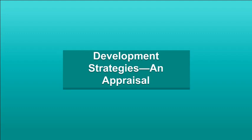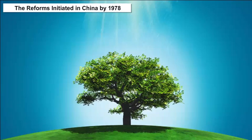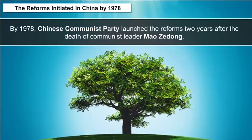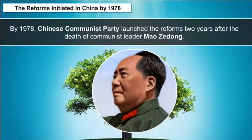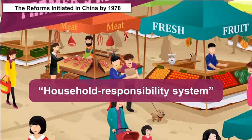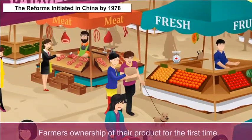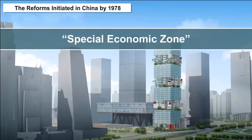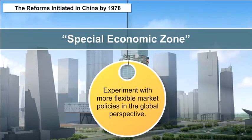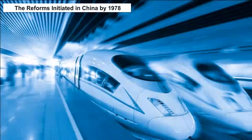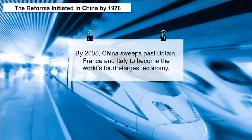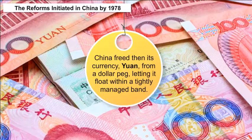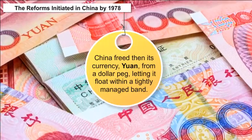Development Strategies and Appraisal — Reforms initiated in China by 1978: By 1978, the Chinese Communist Party launched reforms two years after the death of communist leader Mao Zedong. China started the household responsibility system in the countryside, giving farmers ownership of their product for the first time. The southern city of Shenzhen was made the first Special Economic Zone to experiment with more flexible market policies. By 2005, China swept past Britain, France, and Italy to become the world's fourth largest economy, and freed its currency, the Yuan, from a dollar peg, letting it float within a tightly managed band.